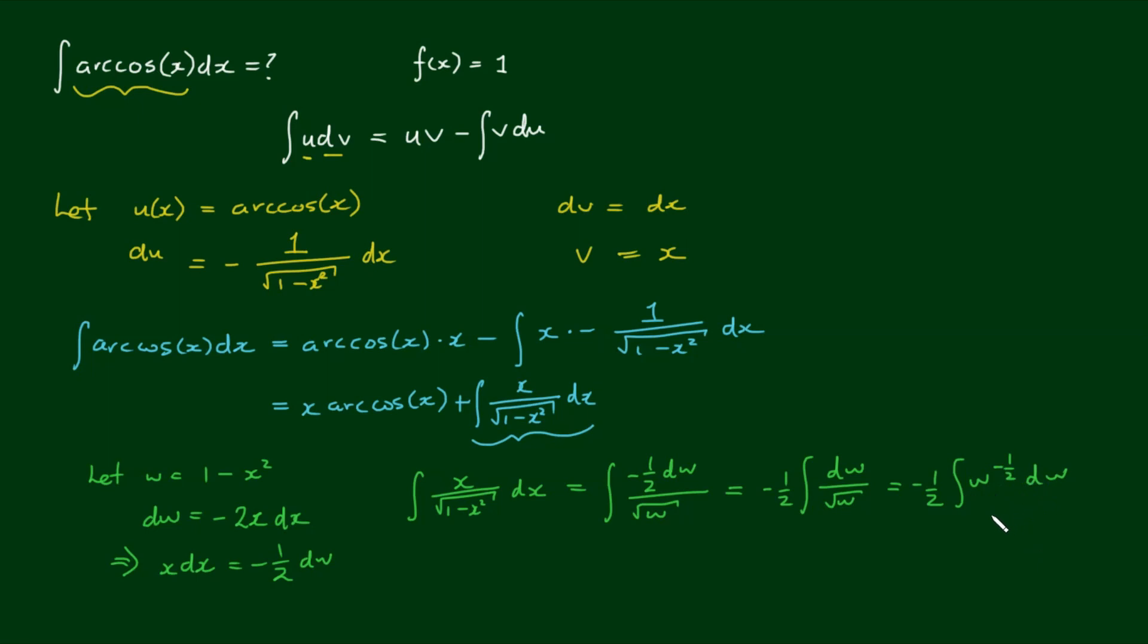And now we can just use the power formula, where we increase the power by 1. So the half stays at the front, increase the power by 1 which gives us positive 1 half, and divide by the new power, 1 half.